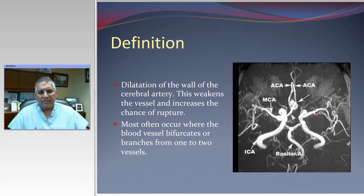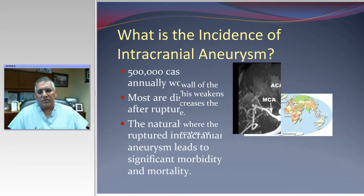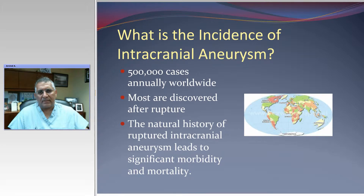As you notice with this diagram, here's an internal carotid artery coming up that divides into the middle cerebral artery and anterior cerebral artery, and right here is an anterior communicating artery aneurysm. That's the ballooning that forms and can rupture. A lot of people ask about this normal loop — this is just a cavernous loop. Most often, the aneurysms occur where the blood vessel bifurcates into branches.